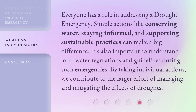Everyone has a role in addressing a drought emergency. Simple actions like conserving water, staying informed, and supporting sustainable practices can make a big difference. It's also important to understand local water regulations and guidelines during such emergencies. By taking individual actions, we contribute to the larger effort of managing and mitigating the effects of droughts.